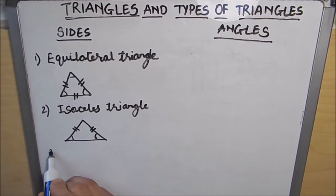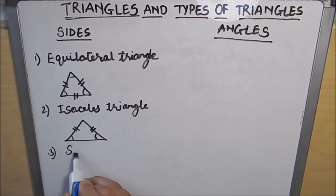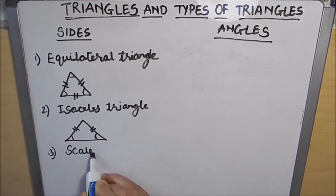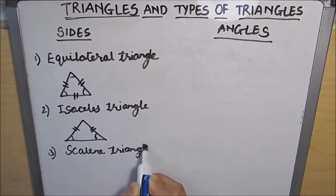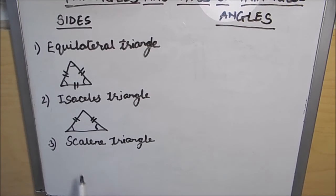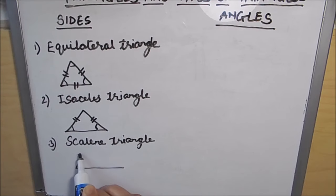The third one is the scalene triangle. A scalene triangle is a triangle in which all the sides are of different length.